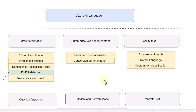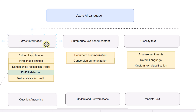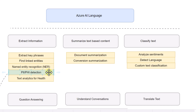In this video, we are primarily going to focus on the extract information part, and under this our primary focus is going to be on PII and PHI detection — how we can detect all the sensitive information and how we can mask it so that it doesn't get exposed to end users.